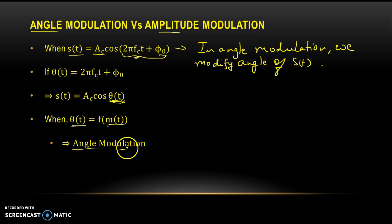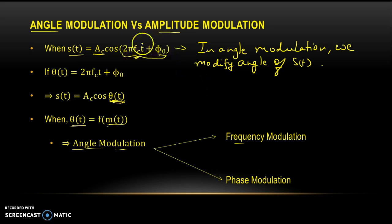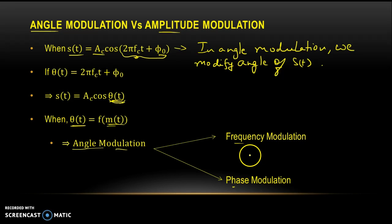In angle modulation we have two things: frequency modulation, where we modify the frequency of the wave, and phase modulation, where we directly modify the phase. Both are cases of angle modulation because the angle is dependent on frequency and on phase. We will modify each parameter separately, understand the mathematics involved, and learn how frequency modulated and phase modulated waves are generated.